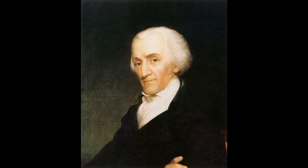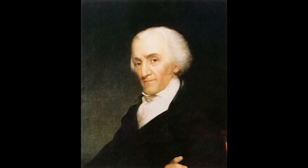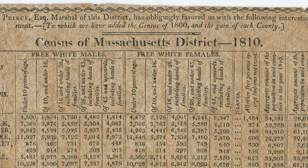Elbridge Gerry was an established politician who'd signed both the Declaration of Independence and the Articles of Confederation, and then served in the House of Representatives before being elected Governor of Massachusetts in 1810.